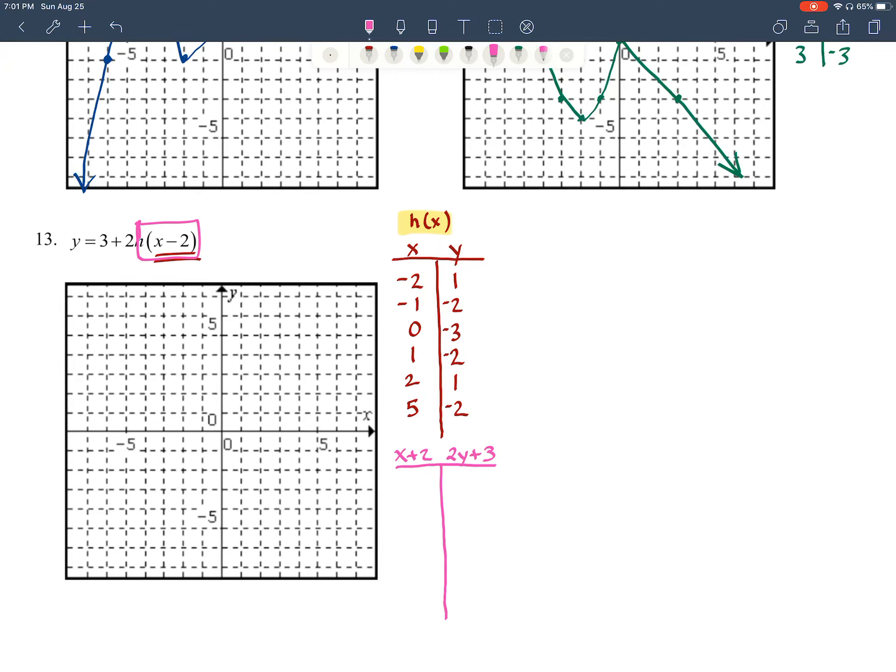Now use your original points from above to get your new coordinates. So I've got negative 2 plus 2 is 0. Negative 1 plus 2 is 1. 0 plus 2 is 2. 1 plus 2 is 3. We've got 2 plus 2 is 4. And 5 plus 2 is 7. On the other side, be a little bit more careful with the y's. So 1 times 2 is 2 plus 3 is 5. Negative 2 times 2 is negative 4 plus 3 is negative 1. Negative 3 times 2 is negative 6 plus 3 is negative 3. We've got negative 2 again, so it should be another negative 1. We've got 1 times 2 is 2 plus 3 is 5. And then we have another negative 2 again, so it also should be negative 1.